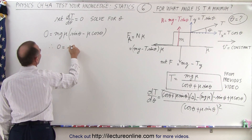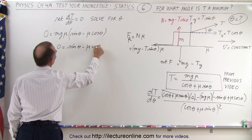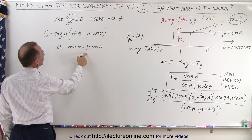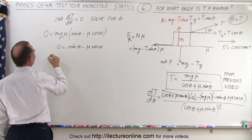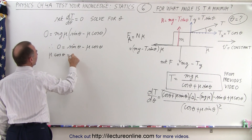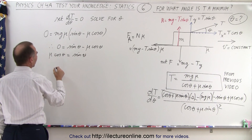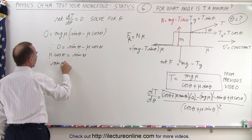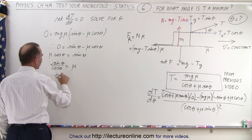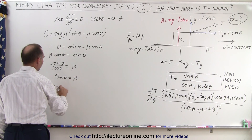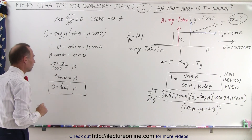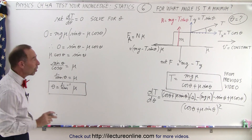For that expression to equal zero, we need: 0 = sine of theta minus mu times the cosine of theta. Moving the mu·cosine term to the other side gives mu times cosine of theta equals sine of theta. Dividing both sides by cosine of theta, we get sine of theta divided by cosine of theta equals mu, or the tangent of theta equals mu. This means theta must equal the inverse tangent of mu — at that angle, we'll have the smallest tension.